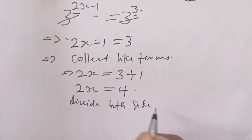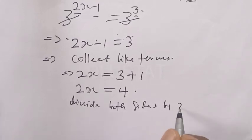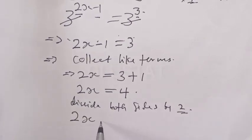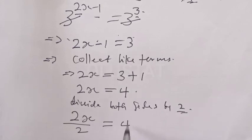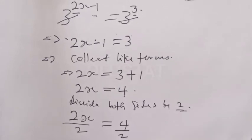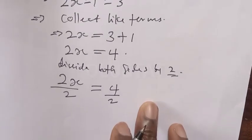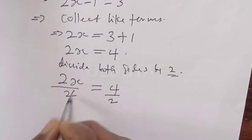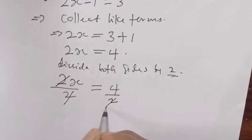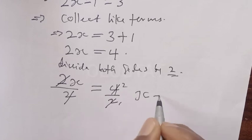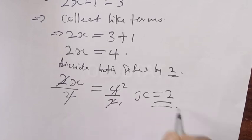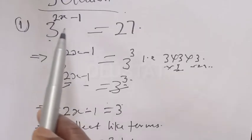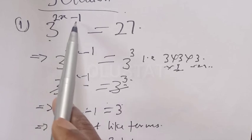Dividing both sides by 2: 2x over 2 is equal to 4 over 2. The 2s cancel, so x is equal to 2. That is the answer — that's a simple way to solve this exponential equation 3 raised to power 2x minus 1 is equal to 27.